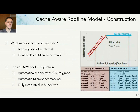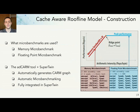The CARM is actually tailored to the specific system it's being built for, because it is based on microbenchmarks which are used to measure your peak bandwidth and your peak floating point performance. We have a memory microbenchmark for each of your memory levels that tells us how much bandwidth we can get from each level, and a floating point microbenchmark to give us the peak gigaflops from your system.